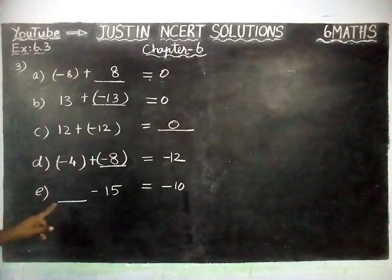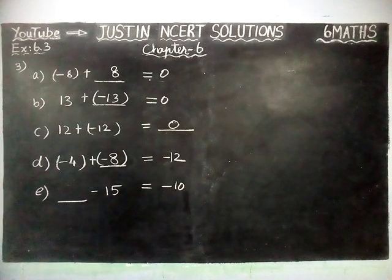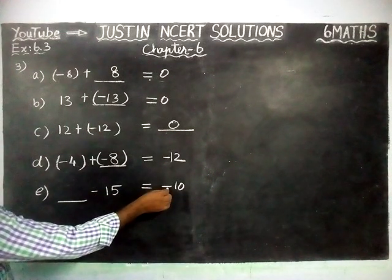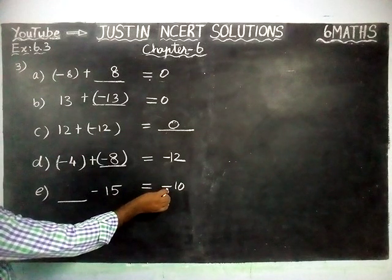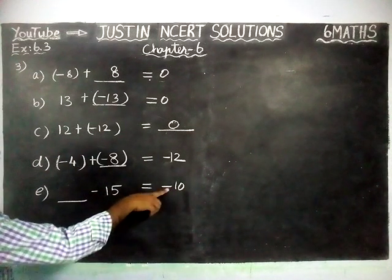Then, part E: dash minus 15 equals minus 10. Here, in the answer we have minus 10. So definitely this number is less than this. Then only we will get a minus sign. So, difference between 15 and 10 is 5.